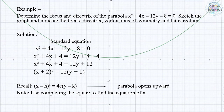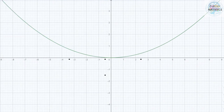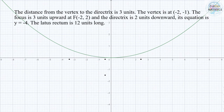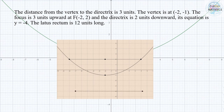We solve for the focal length, giving us a result of 3. Therefore, the distance from the vertex to the directrix is 3 units. The vertex is at (negative 2, negative 1). The focus is 3 units upward at (negative 2, 2), and the directrix is 3 units downward, so its equation is y equals negative 4. The latus rectum is 12 units long.